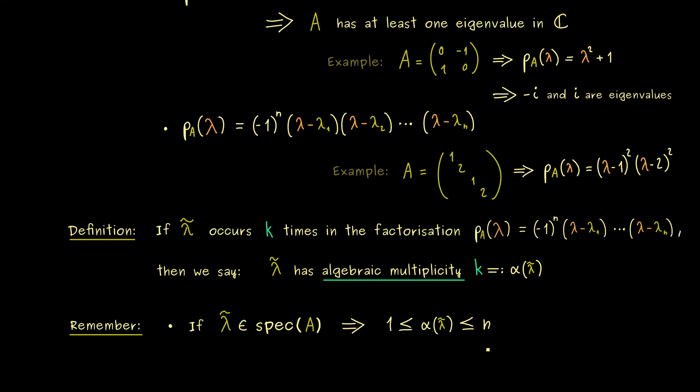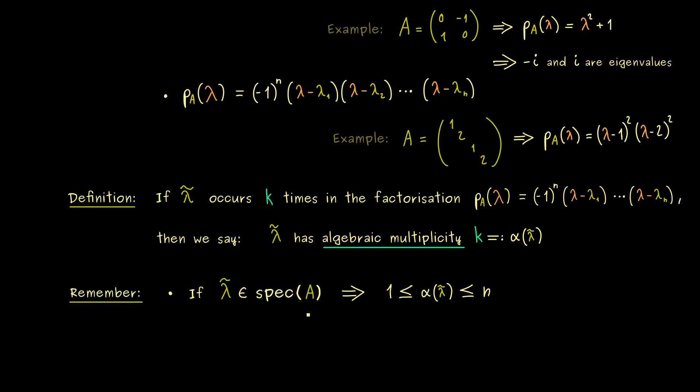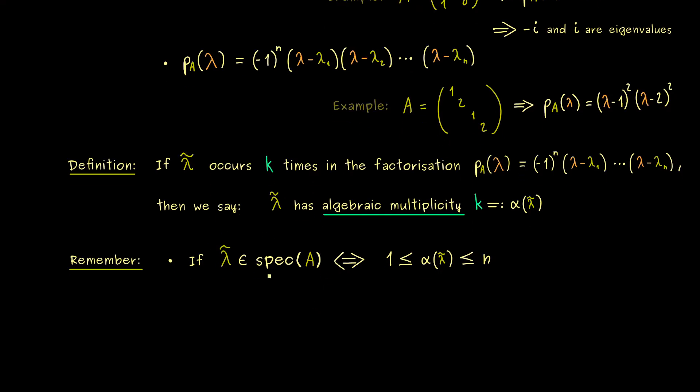Of course n as before is the number of columns or rows of the square matrix A. Moreover this also works the other way around, because if the algebraic multiplicity is greater or equal than 1, we know it is a zero of the characteristic polynomial. Hence it is an eigenvalue of A if we also include complex numbers. I already told you we will talk later about the extension with complex numbers. However, I would say for the algebraic multiplicity we can already deal with complex numbers.